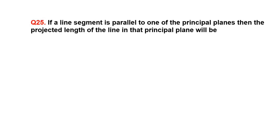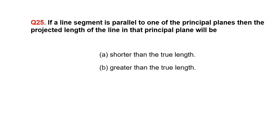If a line segment is parallel to one of the principal planes, then the projected length of the line in that principal plane will be: A. Shorter than the true length, B. Greater than the true length, C. True length.